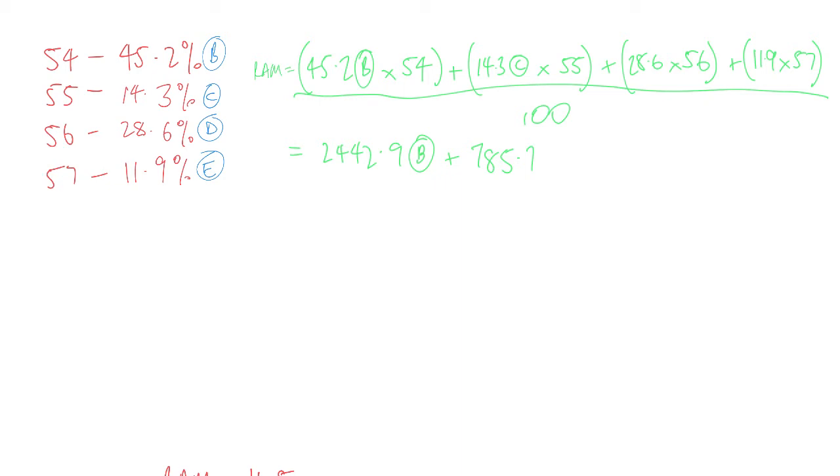Then I'm going to do the next one, which is D times 56, which is 1600 exactly, which is convenient. And we're going to save that as D. And then E times 57 is 678.6, which I'm going to save as E again.